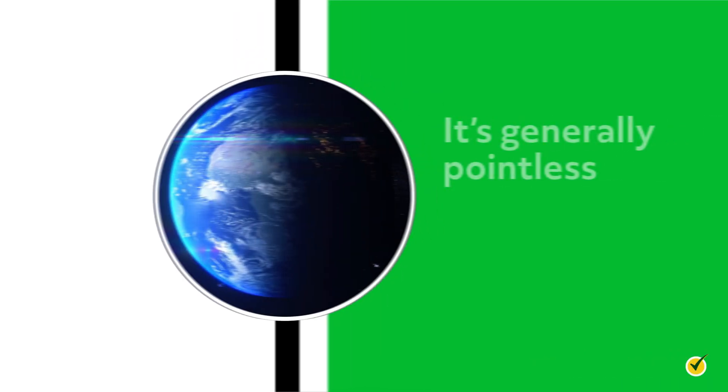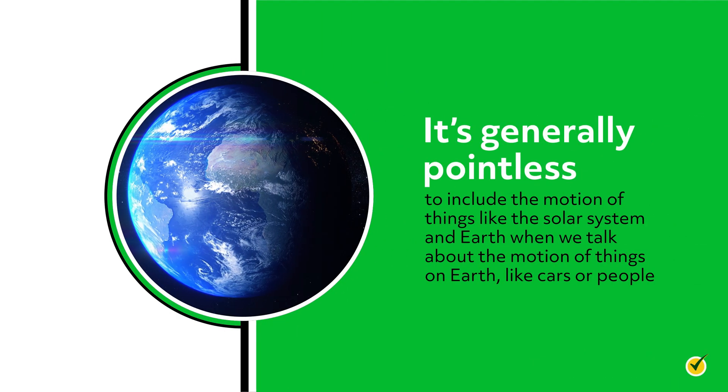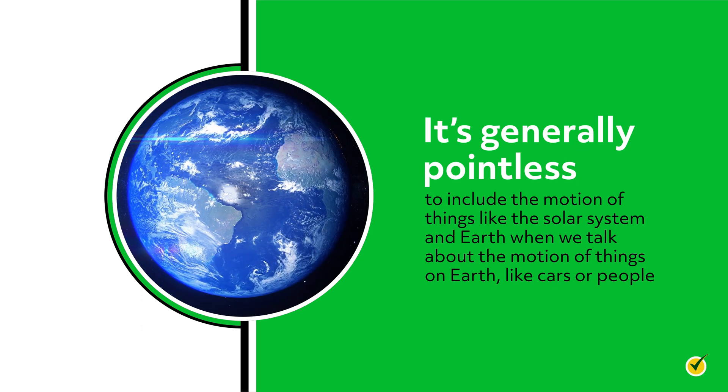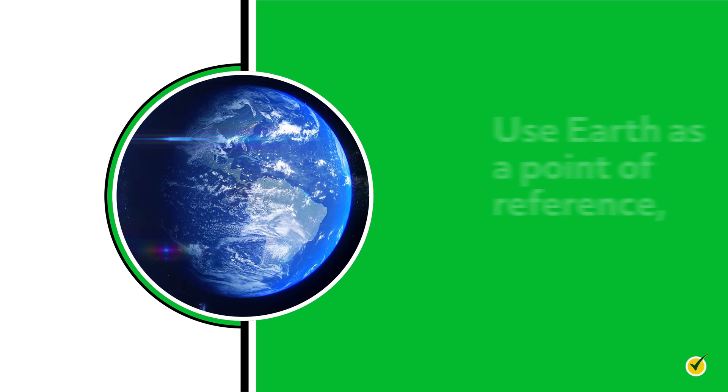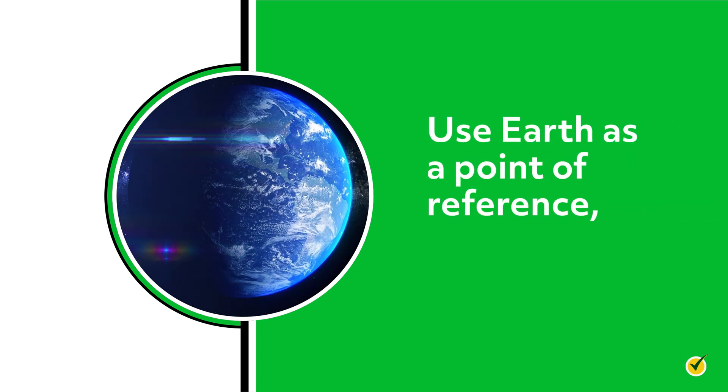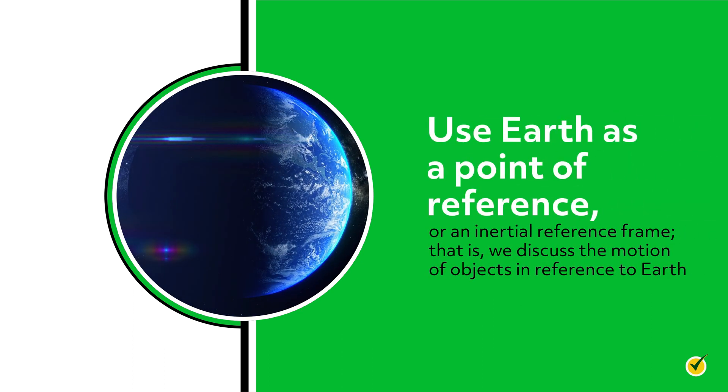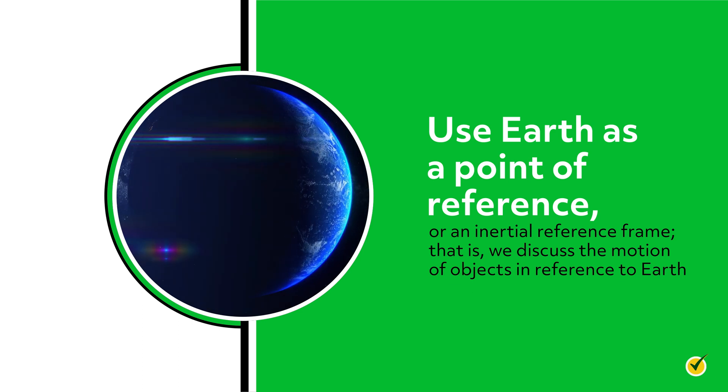However, it's generally pointless to include the motion of things like the solar system and Earth when we talk about the motion of things on Earth, like cars or people. What we do instead is use Earth as a point of reference, or an inertial reference frame. That is, we discuss the motion of objects in reference to Earth.